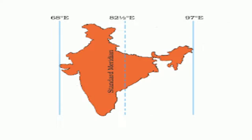In India, 82.5° east longitude is considered the standard meridian of the country. It passes through Allahabad in Uttar Pradesh. The time based on this meridian is called the Indian Standard Time, that is IST. It is 5 hours and 30 minutes ahead of GMT — Greenwich Mean Time.